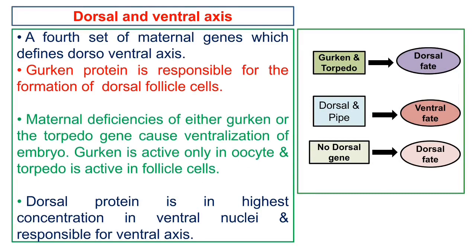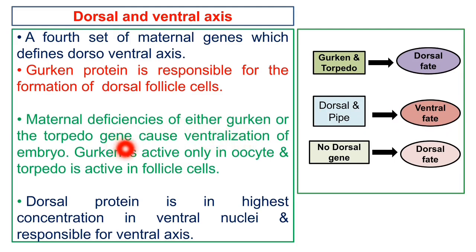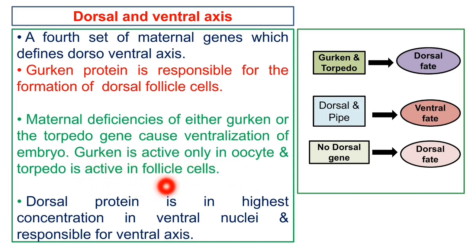A fourth set of maternal genes defines the dorsal and ventral axis. Gurken and torpedo are responsible for formation of dorsal follicle cells or dorsal fate. Dorsal and pipe proteins are responsible for ventral fate development. Maternal deficiencies of either gurken or torpedo cause ventralization of the embryo. Note that gurken is active only in the oocyte and torpedo is active in follicle cells.